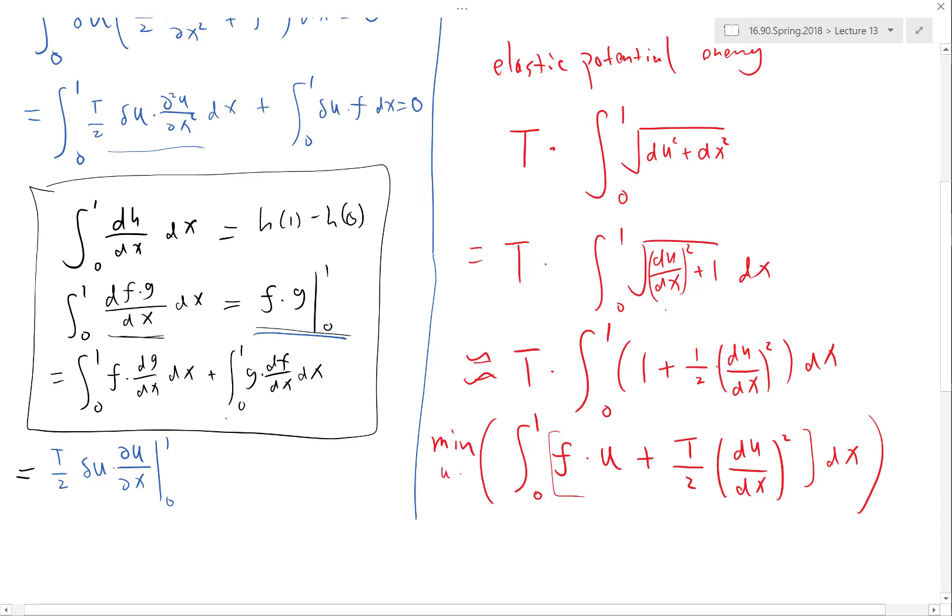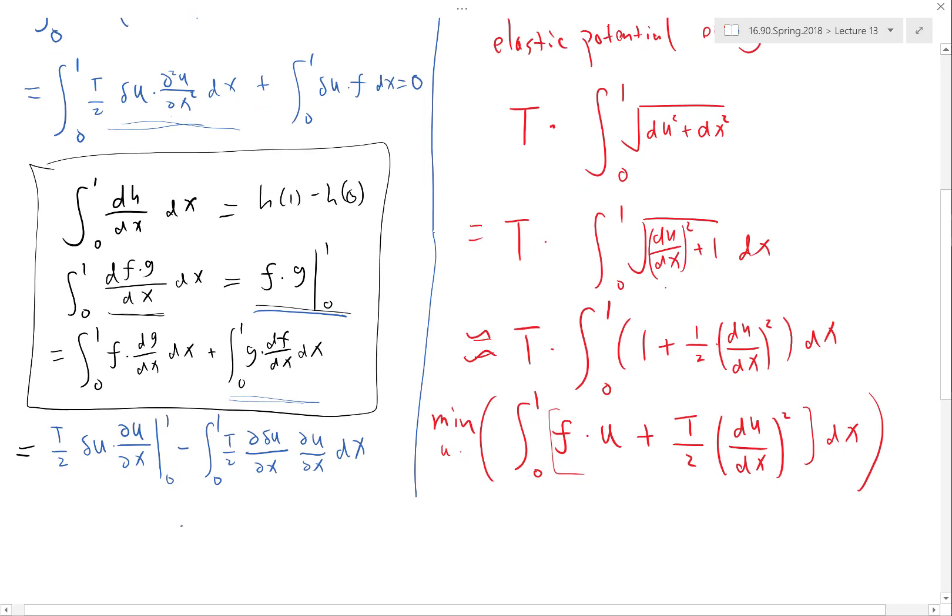And then I have a minus because when I move this term to the other side I get a minus. Minus integration over the same domain. Half of t is the same and the derivative is now on delta u, and I still have one derivative left on u. So this is how the first term became. I still have to add the second term.